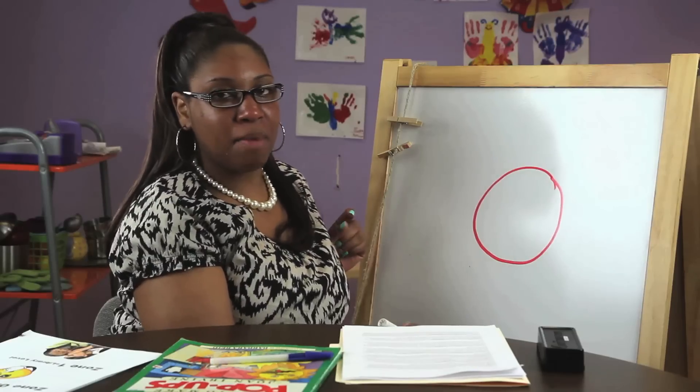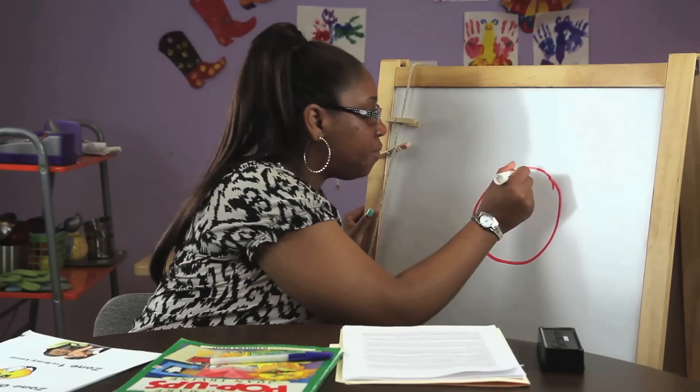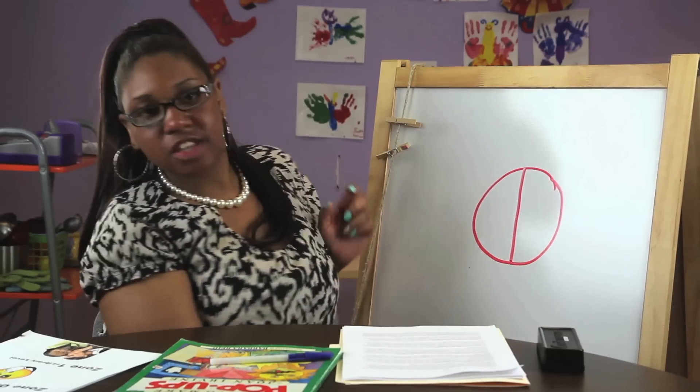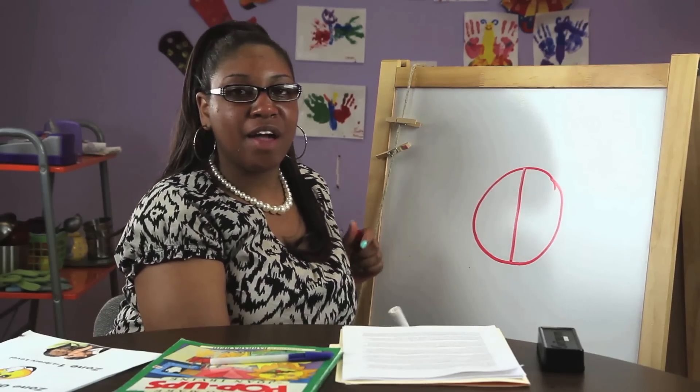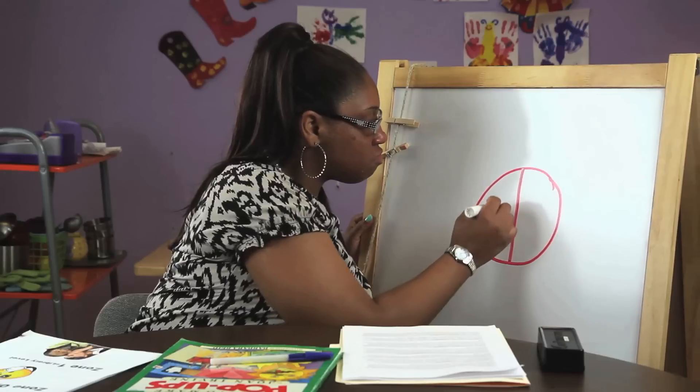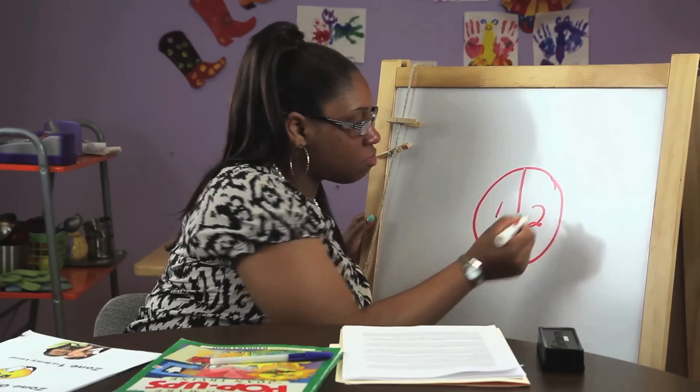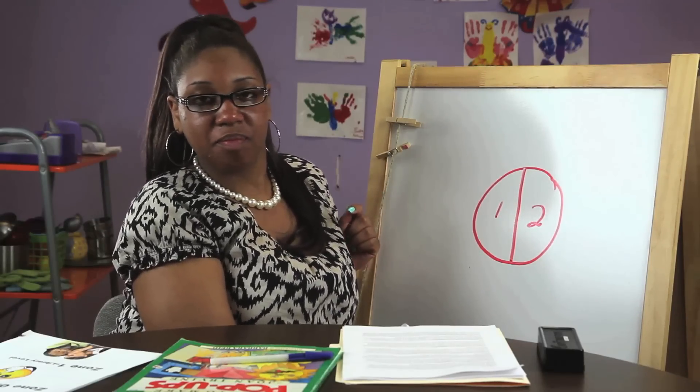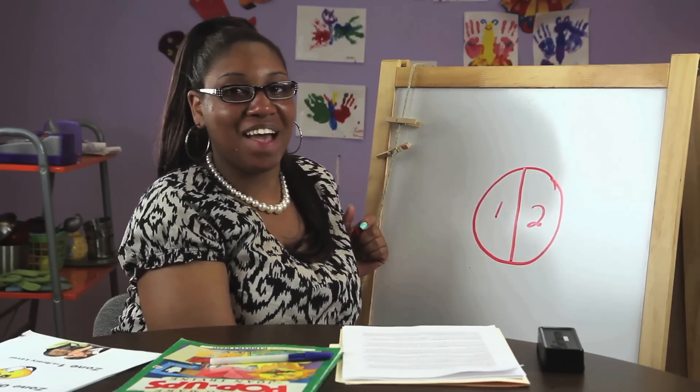Then, chop the pie in half. Explain to the children that the line represents two slices, which equals a whole pie that we just chopped in half.